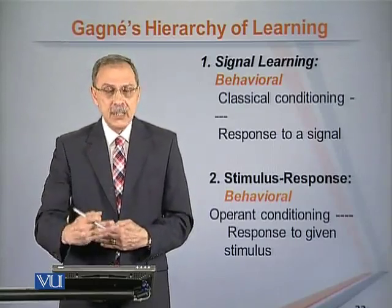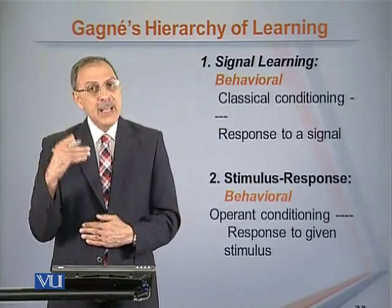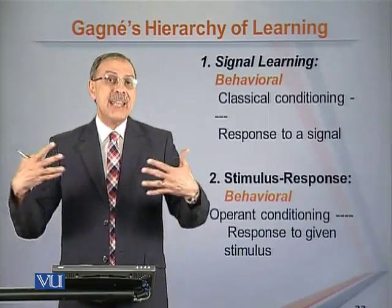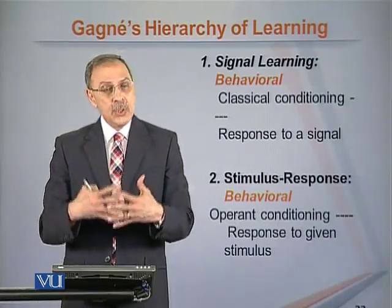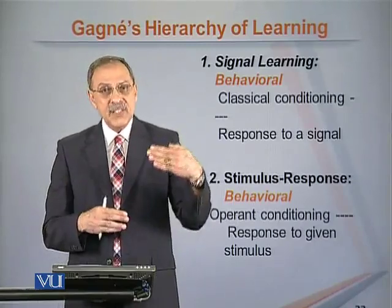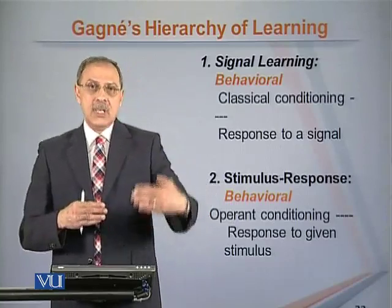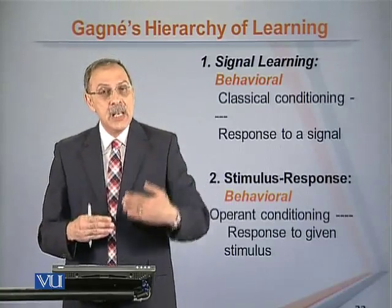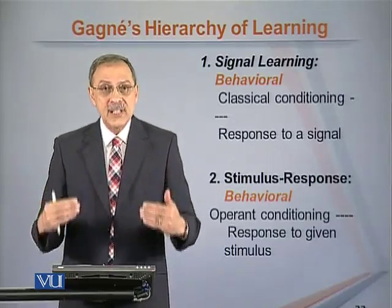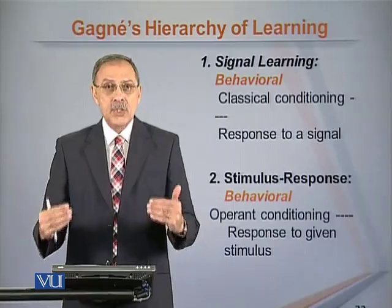Students learn by associating signals with a particular action to be conducted. When a signal goes and the teacher has to repeat the directions, then the student hasn't made that association yet. The student should not need verbal directions from the teacher if the association has been made between the signal and what the student has to do. Therefore, the teacher may need to repeat the signal and help students learn what it means until the student understands without any verbal input what to do when the signal goes.